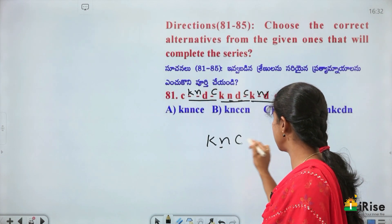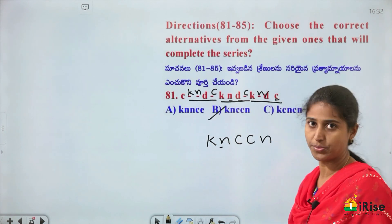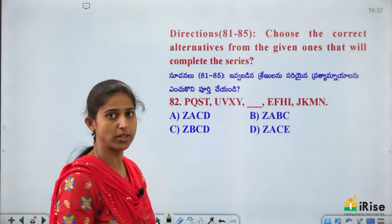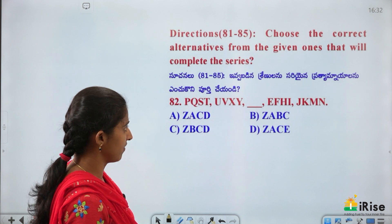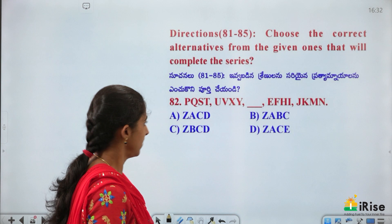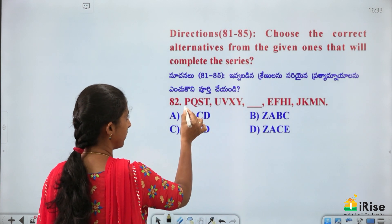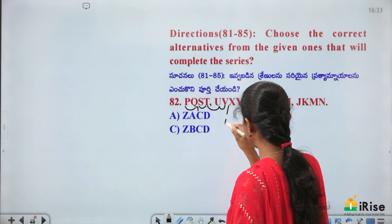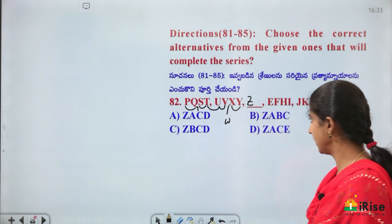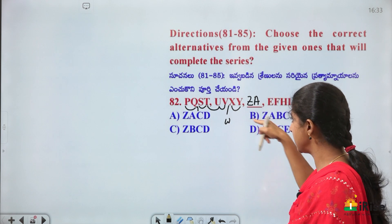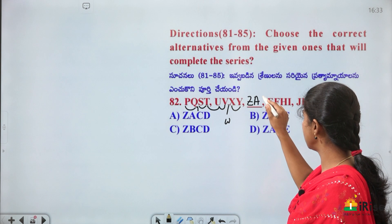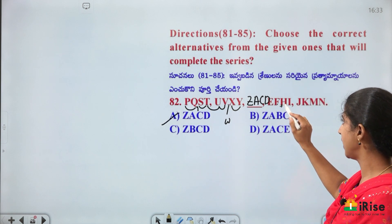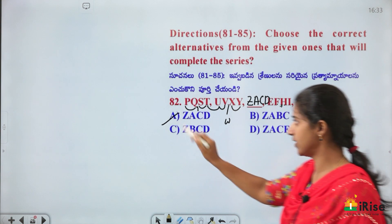Letter series: B, S, T, U, V, X, Y, F, E, F, H, I, J, K, M, N — pattern analysis. Letters follow with one letter skipped alternately. The sequence: P, Q skipped, R missed; S, T, U, V; W missed; X, Y, Z then back to A; B missed, C, D. Pattern continues: E, F; G missed; H, I; J, K; L missed; M, N. Next set is Z, A, C, D — answer is option A.